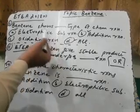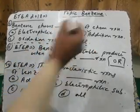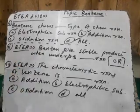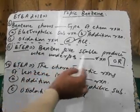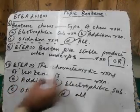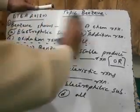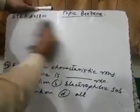So all reactions are possible in benzene, meaning the answer to the first question is 'all of these.' For the second and third questions — 'benzene gives a stable product when it undergoes dash reaction' and 'the characteristic reaction of benzene is dash' — these are the same question but ask something slightly different.